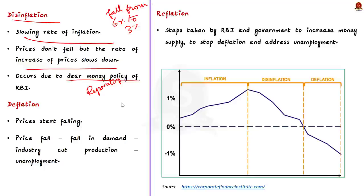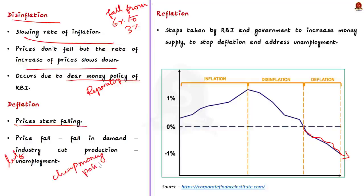Deflation is a condition of falling prices. In case of deflation, the rate of inflation turns negative. During deflation, as prices start falling, industries will cut down on employment as there is no demand in the market — so deflation leads to unemployment. During deflation, the RBI will follow a cheap money policy and the government will increase public expenditure to increase money supply in the economy. Once money supply increases, the rate of inflation will turn positive and demand in the economy will increase again. This policy of the RBI and the government to increase money supply, mainly to address deflation and unemployment, is called reflation.